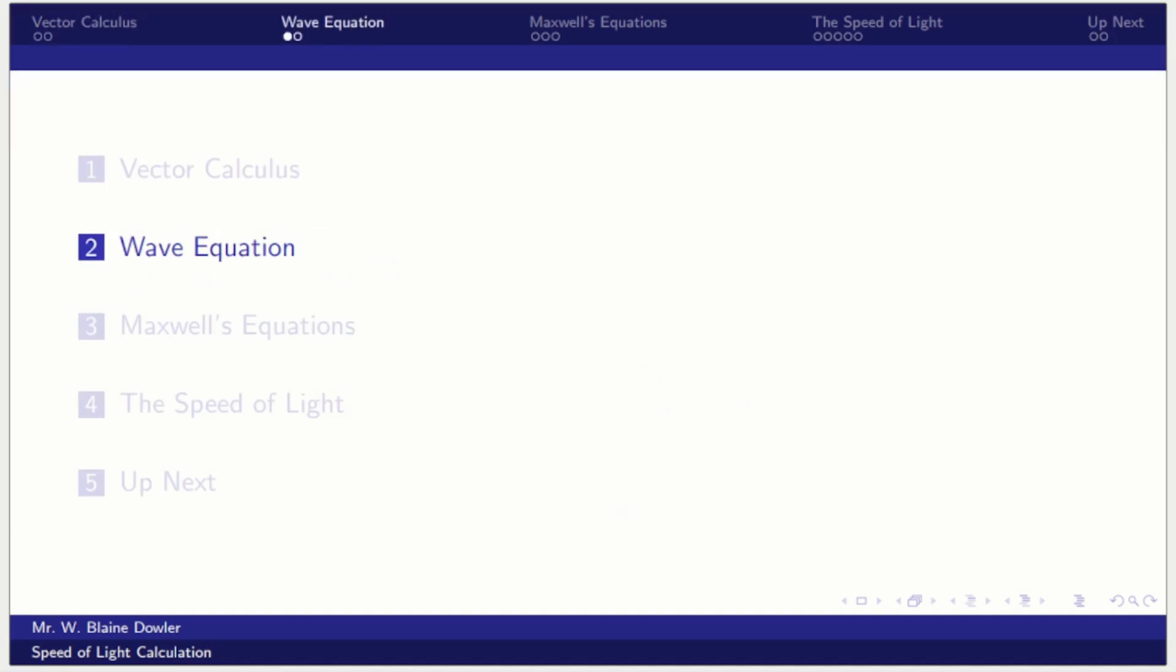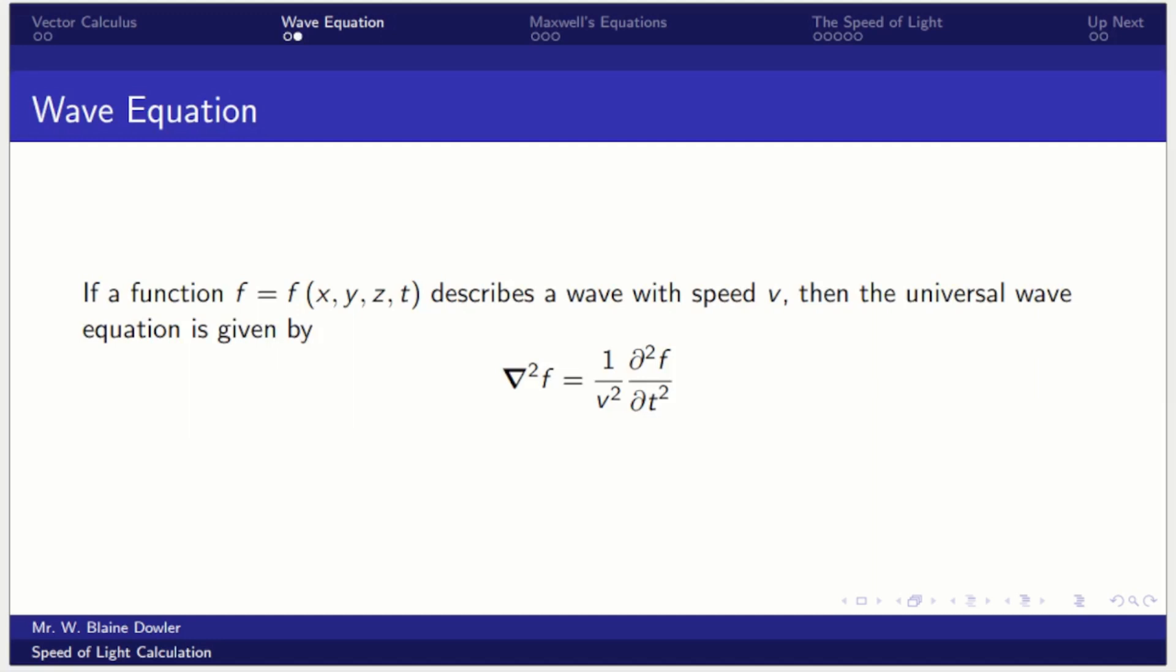We're also going to review the wave equation. If you have a function that describes a wave with speed v, then the universal wave equation is given by the gradient squared of that function, and that is going to equal one over the speed of that wave squared times the second partial time derivative of that function. So these are the key preliminaries, and now we can start getting into the actual content.